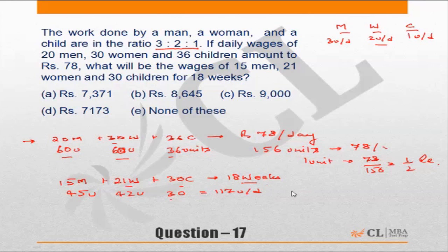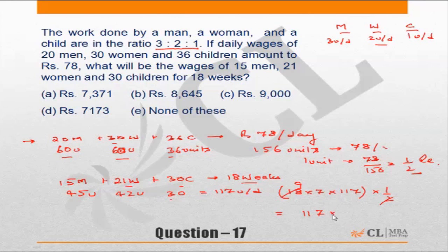For 18 weeks, total work done is 18 weeks into 7 days per week into 117 units per day. The pay rate is 1/2 rupee per unit, so total wages equal 18 into 7 into 117 into 1/2, which simplifies to 117 into 9 into 7, equaling 7371. This is choice K. The calculation is straightforward; the key is choosing the right method for you.